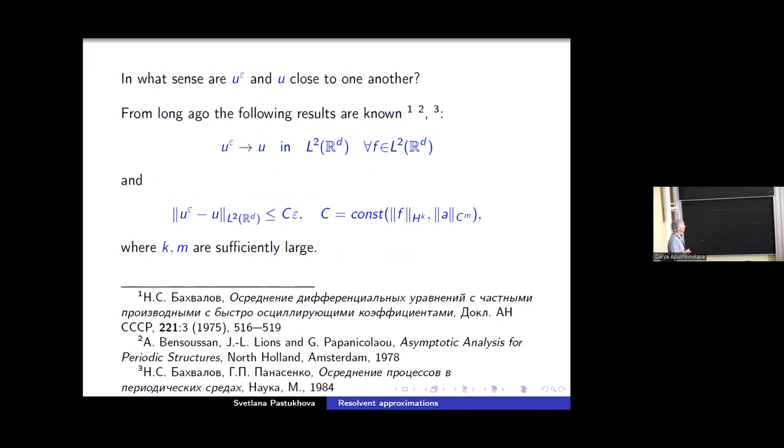Which can be calculated with the help of the solutions to auxiliary problems. Here are they. And relation below defines the homogenized matrix A^0. From long ago, it is known that the solution of initial problem, u_ε, converge in L^2, to the solution of the homogenized problem for every function F from L^2. And on the additional regular condition, it was obtained in 1970s.